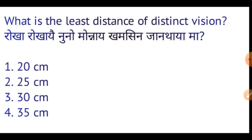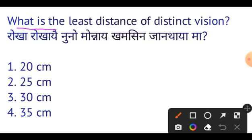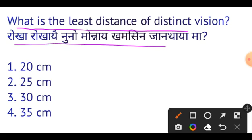What is the least distance of distinct vision? The least distance of distinct vision is 25 cm. In a normal eye, the distance of distinct vision is 25 cm.